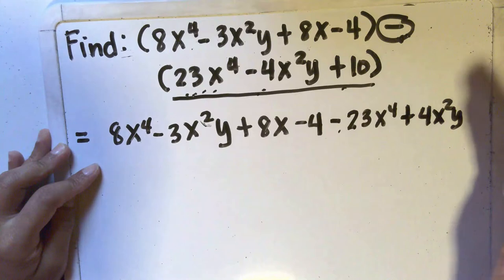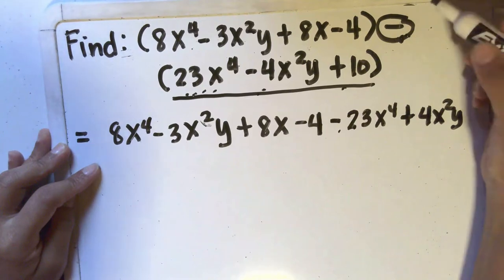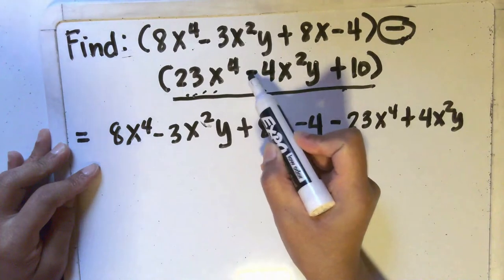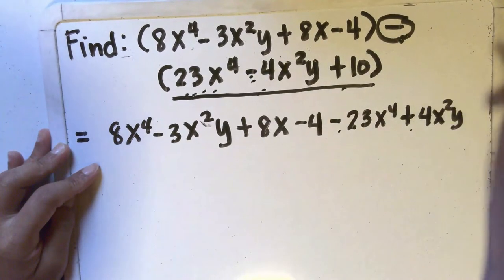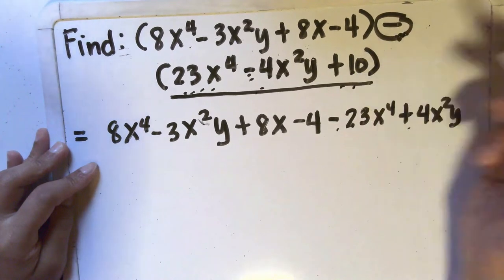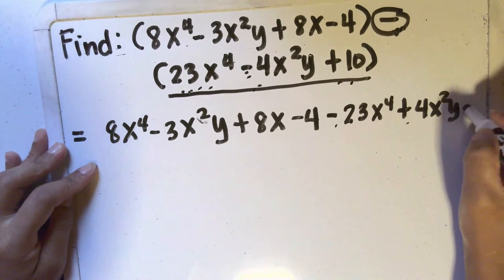You can think about the rules in subtracting integers or you can also simply multiply this negative sign by that negative sign. So negative times negative is positive. And then you'll have minus positive 10 which is the same as minus 10.